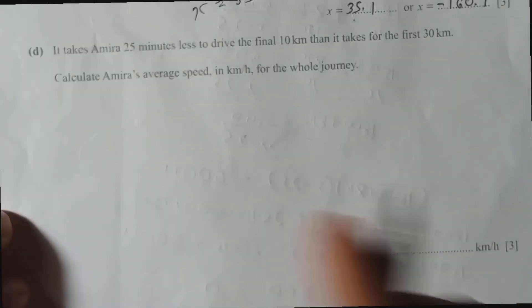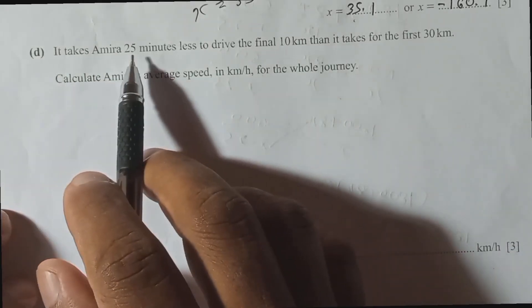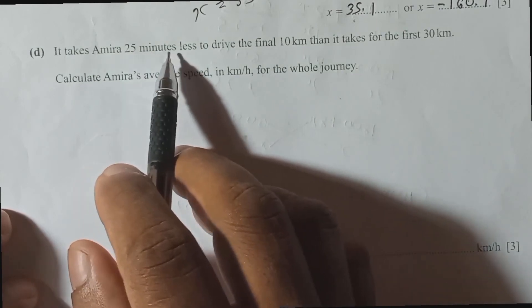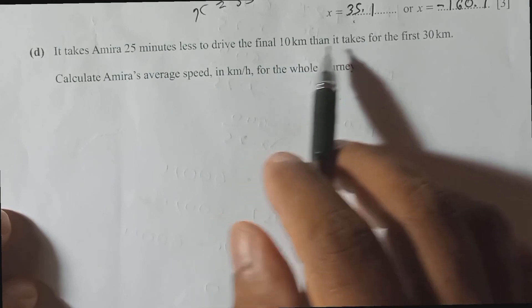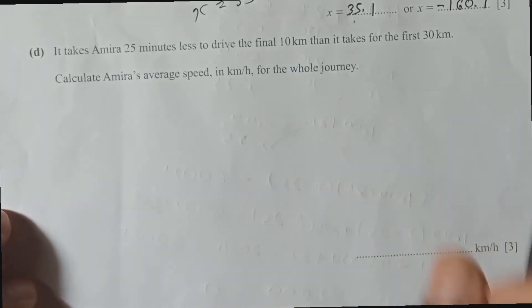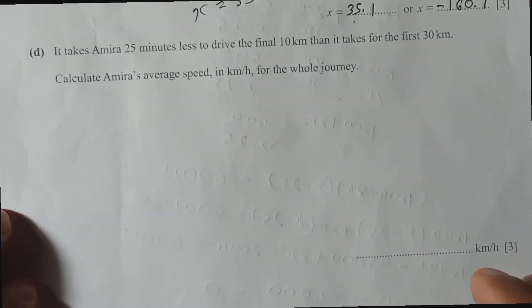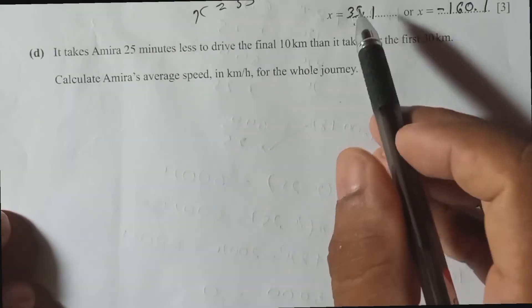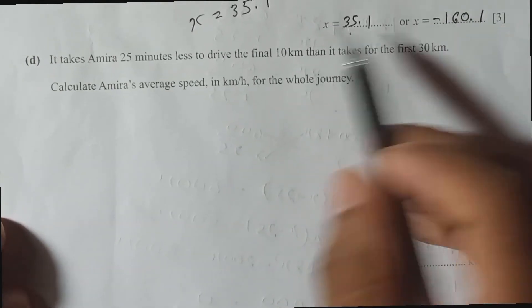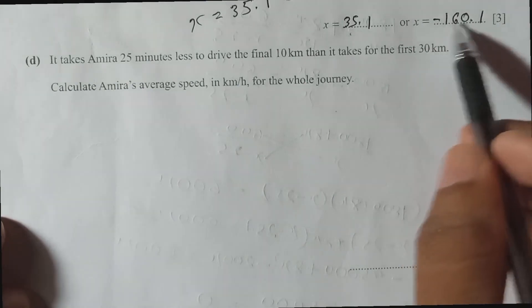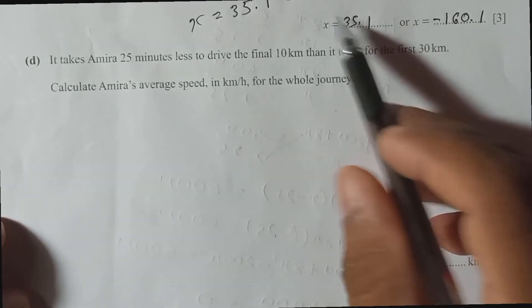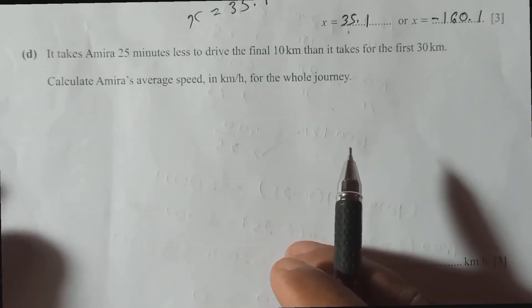Last part. They tell us it takes Amira 35 minutes less to drive the final 10 kilometers than it takes for the first 30 kilometers. The time for the first 30 kilometers is x, and from our two answers, we must take the positive value 35.12 minutes, because time cannot be negative.